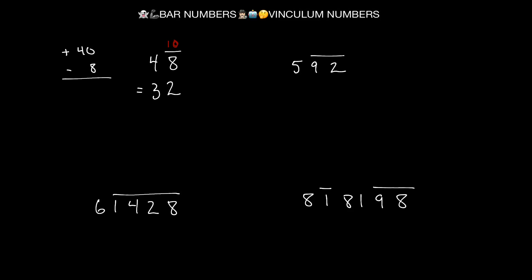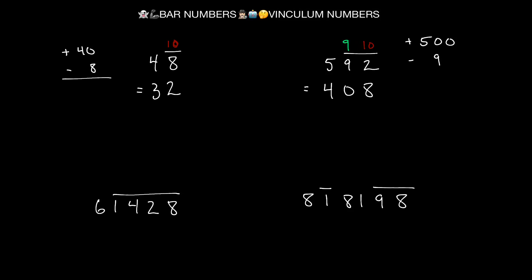Now let's look at 5̄9̄2̄ — that's a string with a bar over it, so we apply 'all from 9, last from 10.' We subtract 1 from 5, giving us 4. Then 9 minus 9 is 0, and 10 minus 2 is 8. So 5̄9̄2̄ equals 408. That's because we have positive 500 in the hundreds place, negative 90 in the tens place, and negative 2 in the single units place: 500 minus 90 minus 2 equals 408.